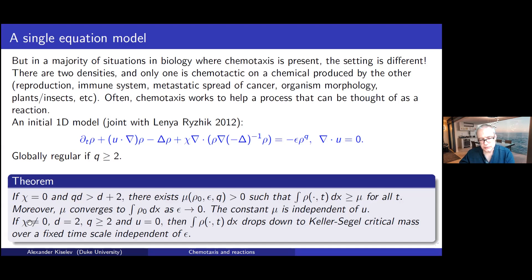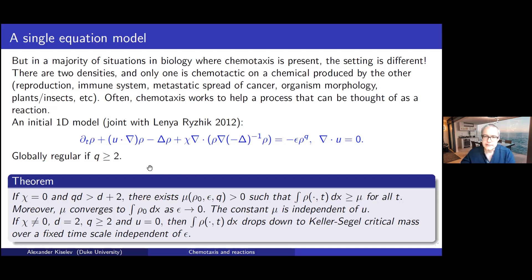But if chemotaxis is present, then in dimension two, the mass of rho drops down to the critical mass of the Keller-Segel equation over a fixed timescale independent of epsilon. There is a singular limit: you take epsilon to zero expecting the reaction to vanish, but it doesn't — driven by the near-singularity. If the power is greater than or equal to two the equation is globally regular, but it becomes so large that it overcomes epsilon and burns a fixed portion of the mass no matter how small epsilon is.